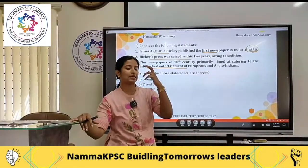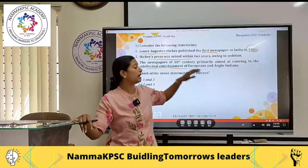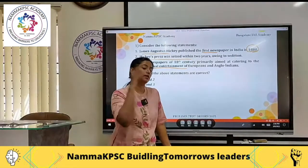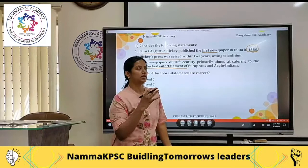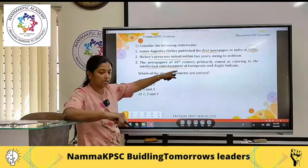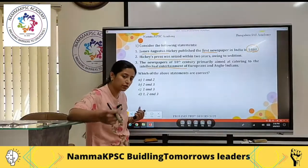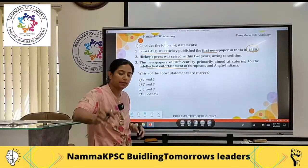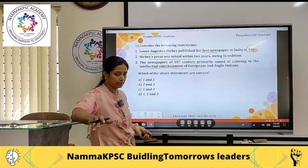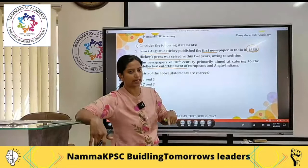For people of British origin, the newspapers provided intellectual entertainment. That means it was actually an analytical document that they were getting about the Indian masses. Around 1850s and 60s, even before the late 19th century, this is definitely true. The main purpose of the papers was this — it was food for thought for them to understand the local people, the societal setup, whether they were liked or disliked, and how their administration was going.